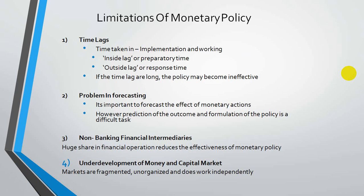The second limitation is the problem in forecasting. It is difficult for the government to make a clear-cut prediction of what the policy outcome will be, how it should be made, where it should be applied, and to what extent. The third limitation is non-banking financial intermediaries — apart from banking, there is a large market for obtaining finance. Corporate houses have many sources for funds, so if credit is obtained through other channels, even a strong monetary policy cannot guarantee control over credit availability.